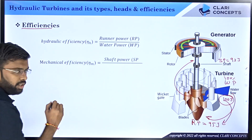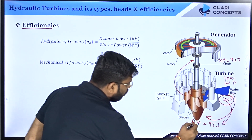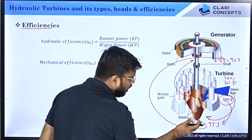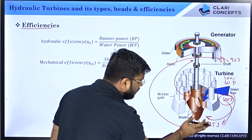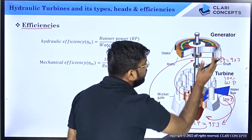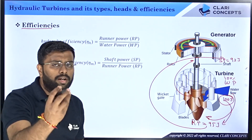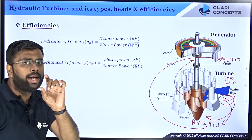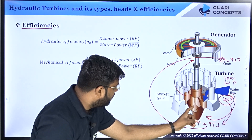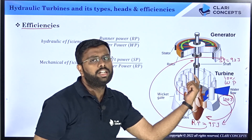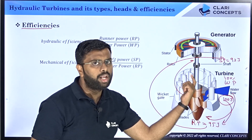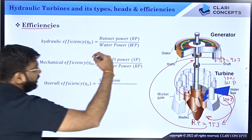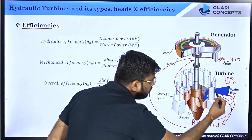Second is mechanical efficiency. This is the conversion from runner power to shaft power — for example from 95 joules to 93 joules. So mechanical efficiency is shaft power divided by runner power. The runner power is so much available, and that percentage which is transferred to the shaft is the mechanical efficiency. Mechanical efficiency eta_M equals shaft power divided by runner power.